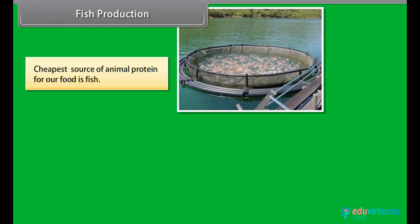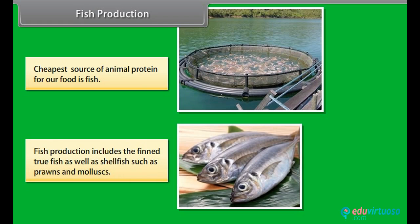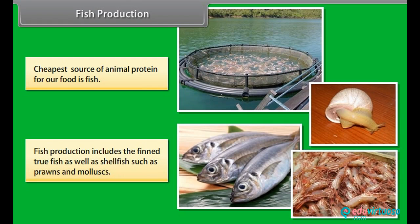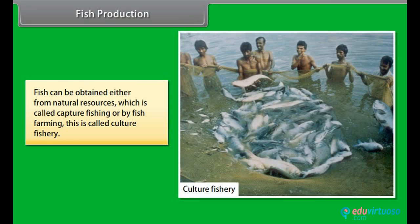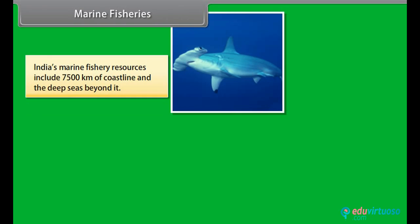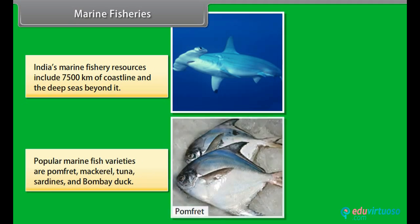The cheapest source of animal protein for our food is fish. Fish production includes true fish as well as shellfish such as prawns and mollusks. Fish can be obtained either from natural resources, which is called capture fishing, or by fish farming, which is called culture fishery. India's marine fishery resources include 7,500 km of coastline and the deep seas beyond it. Popular marine fish varieties are pomfret, mackerel, tuna, sardines and Bombay duck.